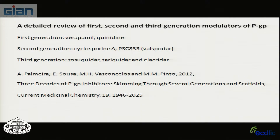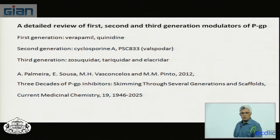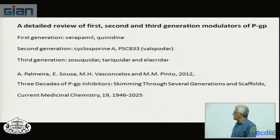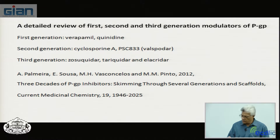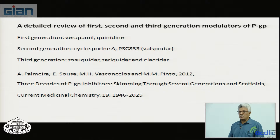Development of modulators for transporters actually began in the early 1980s. The first generation was verapamil and quinidine. Then, in the early 90s, second generation modulators were developed: cyclosporine and its analog valspodar. In the mid-90s to early 2000s, high affinity third generation compounds were developed like zosuquidar, tariquidar, and elacridar. But instead of this historical background — covered well in the 2012 review you have — let's look at more recent approaches.